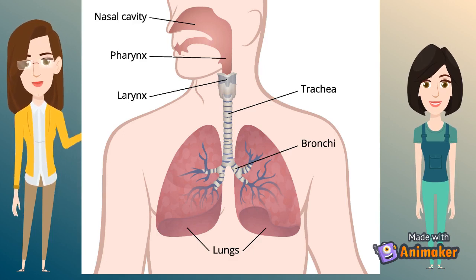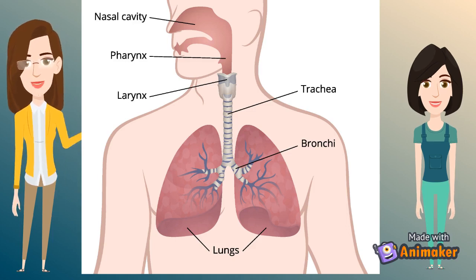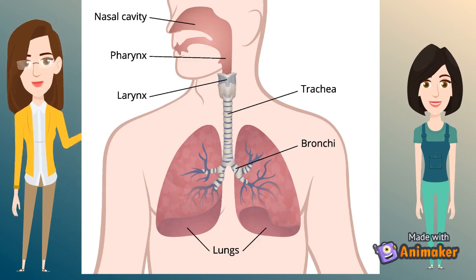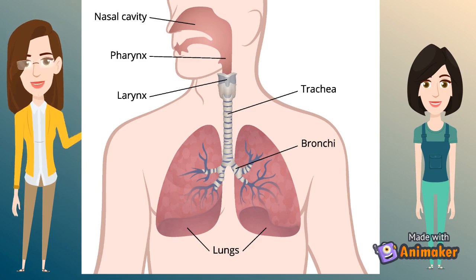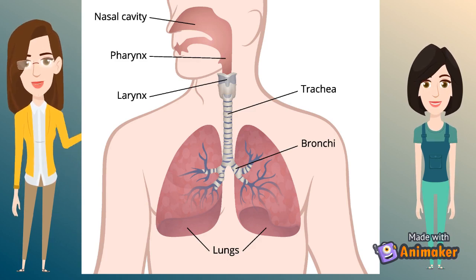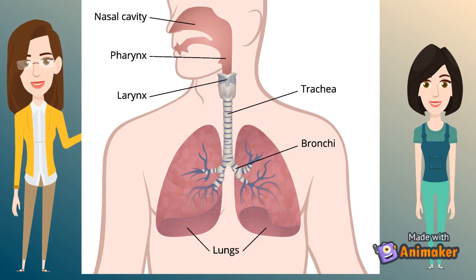After the bronchi, you can see the lungs. The lungs are the primary organ of respiration in humans and other vertebrates. They are located on either side of the heart in the thoracic cavity of the chest. Anatomically, the lungs are spongy organs with an estimated total surface area of 50 to 75 square meters. The primary function of the lungs is to facilitate the exchange of gas between the blood and the air. Interestingly, the right lung is quite bigger and heavier than the left lung.